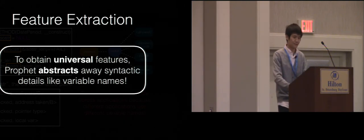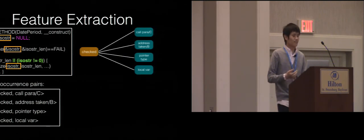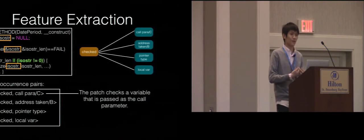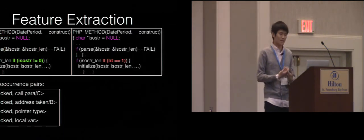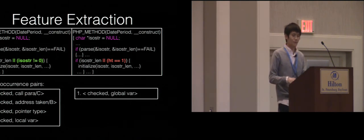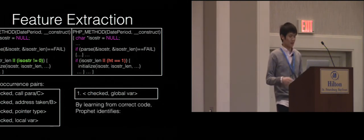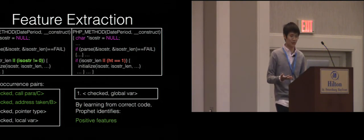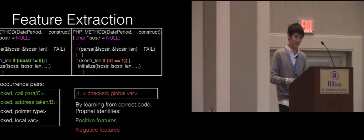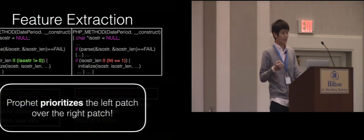After abstracting away syntactic details, the meanings of the co-occurrence pairs change. Now the first pair means 'the patch checks the variable that is also passed as a call parameter.' We can go over the code corpus to check whether each code patch has this feature or not, and then learn over them. We can do the same feature extraction on the incorrect patch, and here we get the fact that it checks a global variable. If we learn over a large corpus of correct code, Profit will be able to identify that the first two pairs of the left patch correspond to positive features that often occur in correct patches, and the first pair of the right patch corresponds to negative features rarely occurring in correct patches. With this learned information, Profit can prioritize the left patch over the right patch.